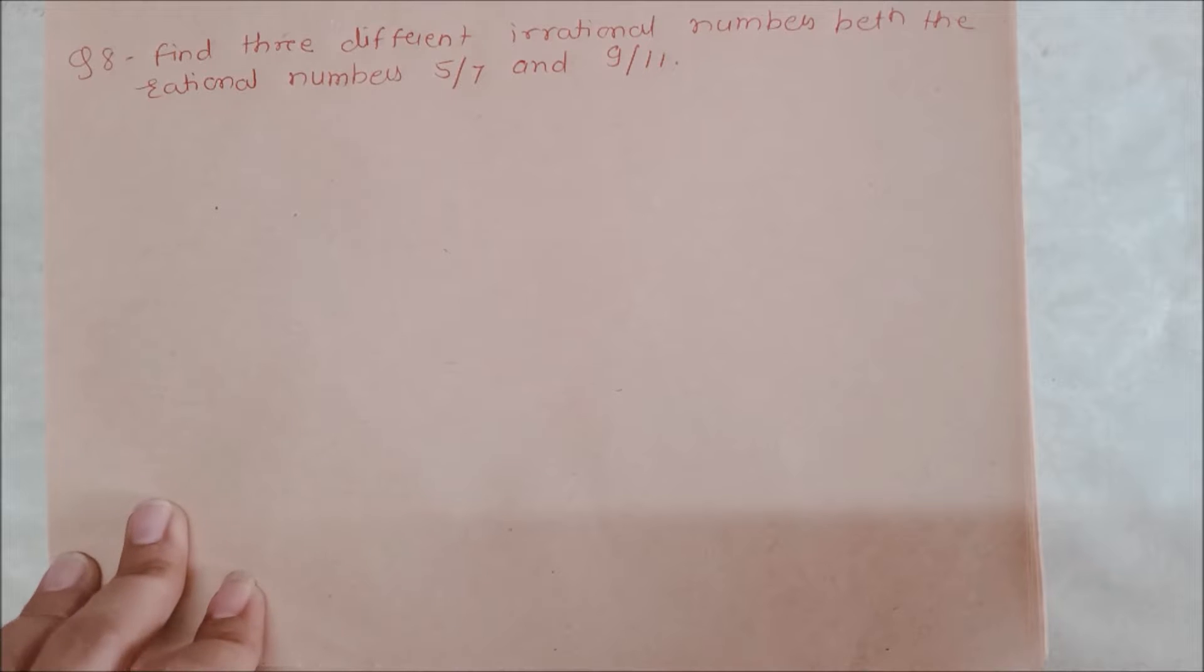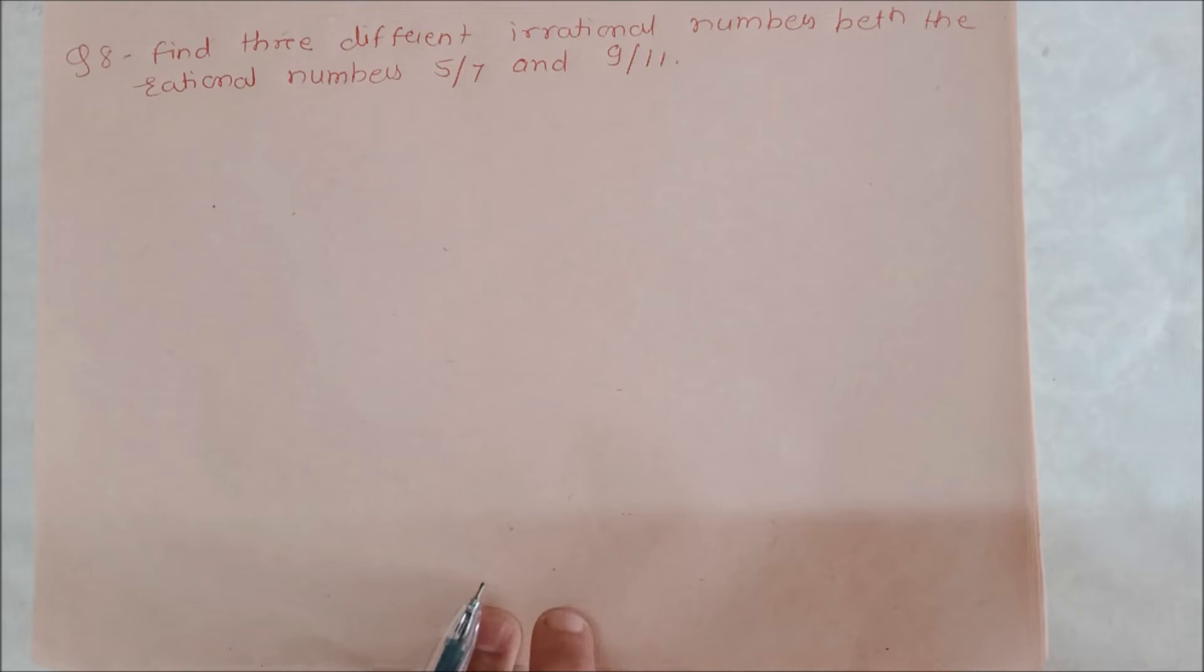Hello friends, welcome back to your own channel Beginners Point. Question number 8: Find three different irrational numbers between the rational numbers 5 by 7 and 9 upon 11. So we need to write three different irrational numbers which are between 5 by 7 and 9 by 11. These are rational numbers, so we need to solve one decimal number.